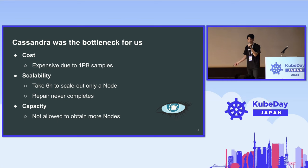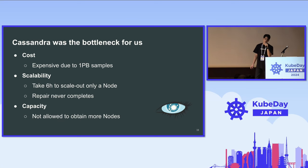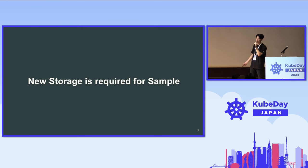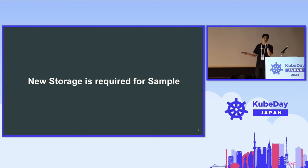Even worse, we are not allowed to obtain additional servers to provision any additional Cassandra cluster. So this means we don't have enough capacity to accommodate users' metrics. To mitigate these three issues — cost, scalability, and capacity — we needed a new data storage layer for accommodating a huge amount of samples.